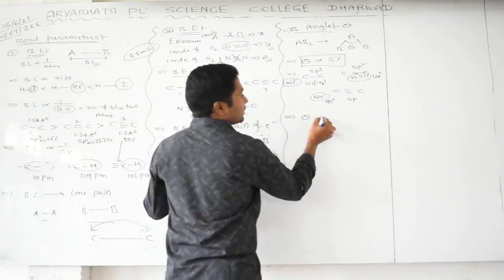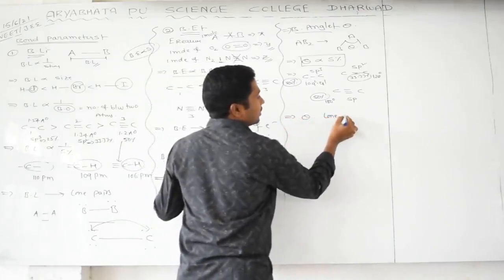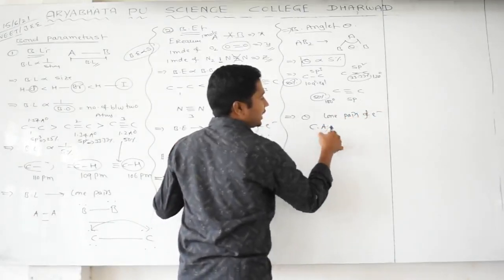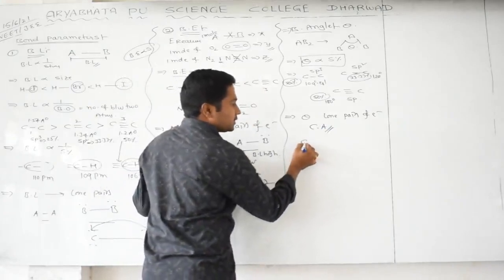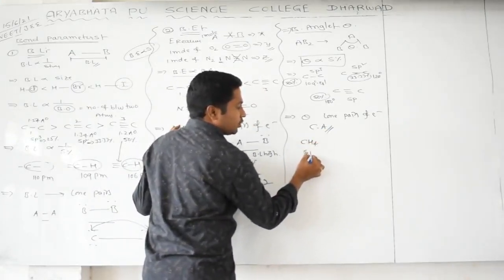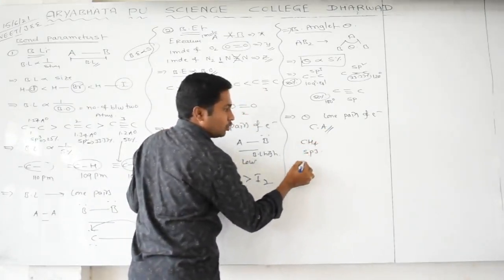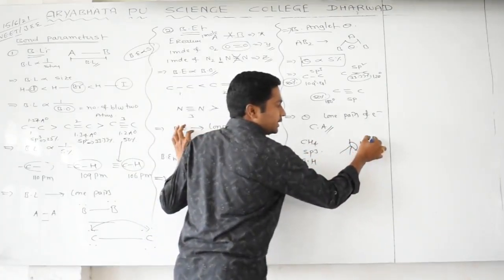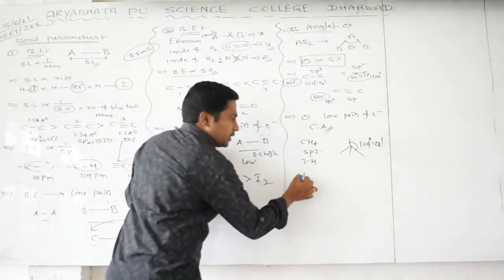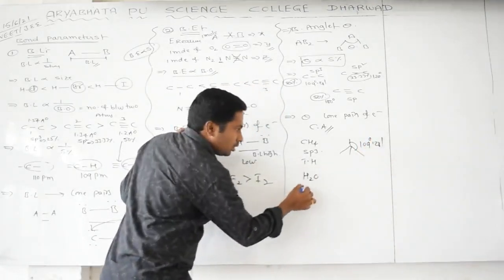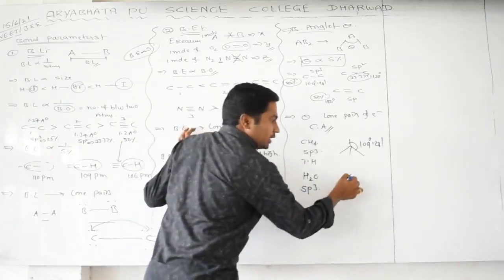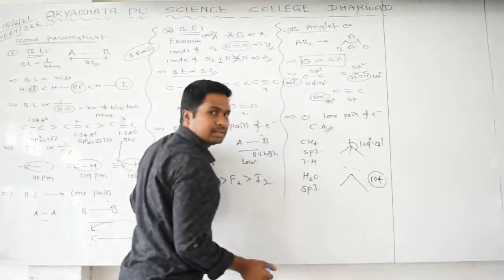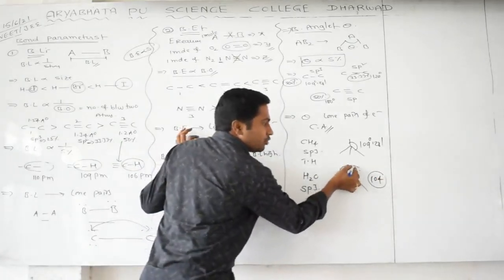Bond angle is also affected by lone pairs on the central atom. For example, CH₄ involves sp³ hybridization with no lone pairs, giving a tetrahedral geometry and bond angle of 109°28'. But H₂O also involves sp³ hybridization yet gives an angular or bent shape with a bond angle of 104°, because lone pairs disturb the bond angle even with the same hybridization.